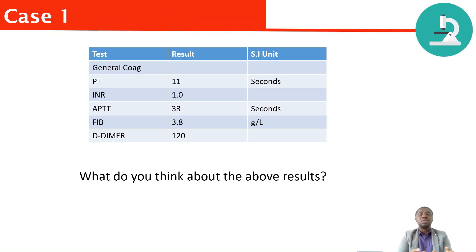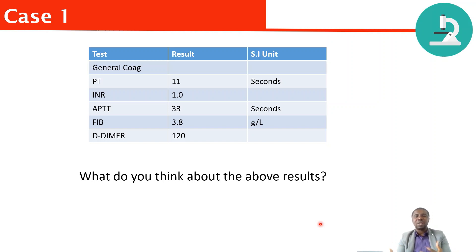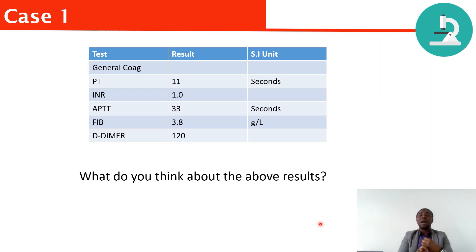Let's look at case number one. If you look at this case, you will see that everything here is normal. When it comes to INR, you don't want it to be more than 1.2 — to some extent maybe 1.3 or 1.4, but once it's reaching 1.56, it is high. I've already made videos about raised PT/INR, raised APTT, low PT/INR, and low APTT, so you can look for those. Today I'm focusing mainly on the result.